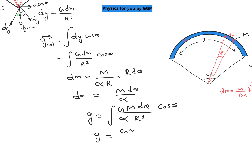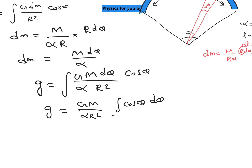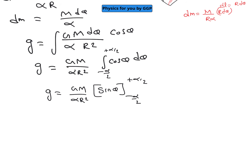We can take Gm / (α·r²) as a constant outside the integral, giving G·m / (α·r²) times the integral of cos θ·dθ. For the limits: since the bisector splits the total angle α symmetrically, the integration runs from −α/2 to +α/2. The integral of cos θ is sin θ, evaluated from −α/2 to +α/2.